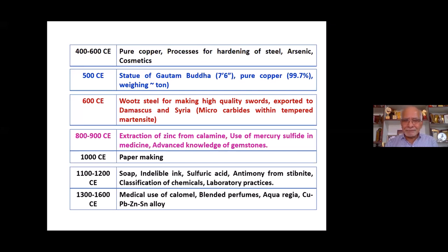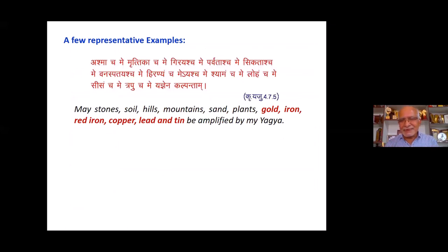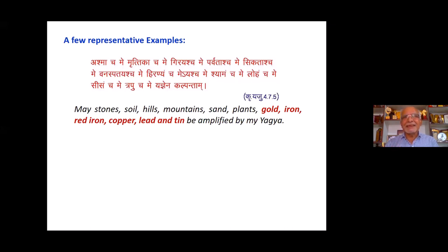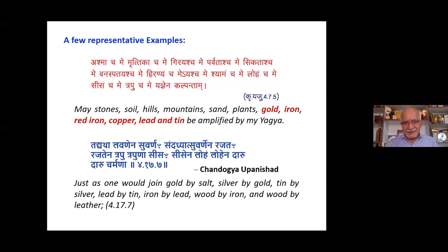Taking representative examples: a verse from the Yajur Veda mentions not only gold, iron, and copper but also lead and tin — 'Sissam Chame, Trapu Chame, Yadnena Kalpada.' In the Chhandogya Upanishad, a verse describes how to join two pieces in the context of a yajna: just as one joins gold by salt, silver by gold, tin by silver, lead by tin, iron by lead, and wood by iron — revealing metallurgical knowledge of joining metals.